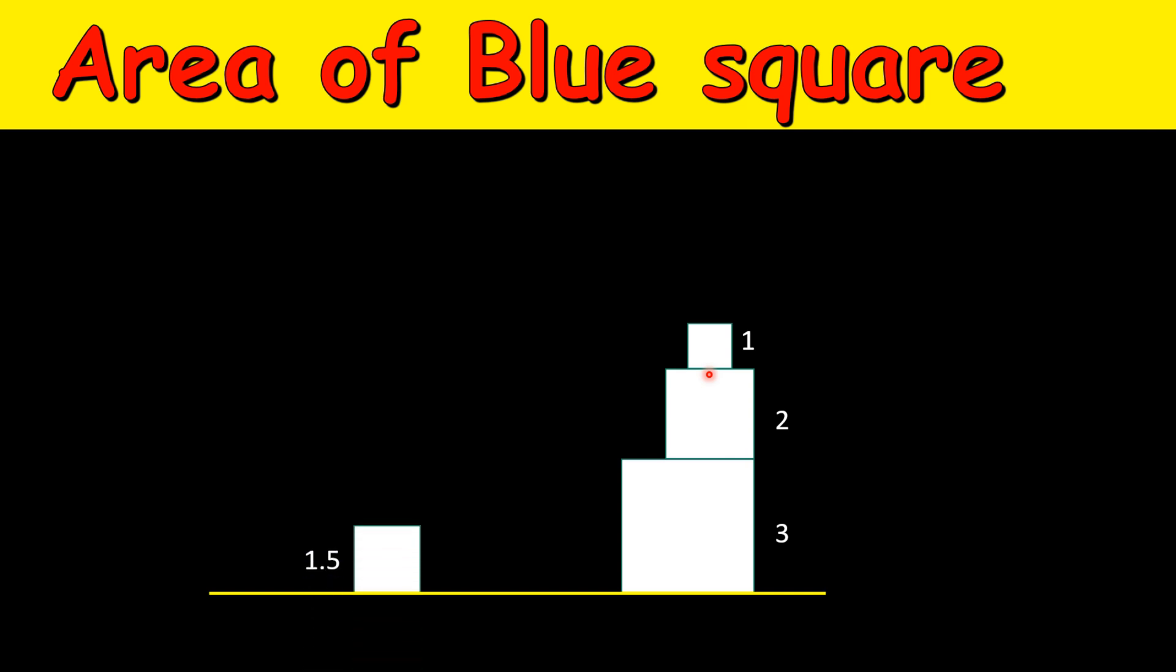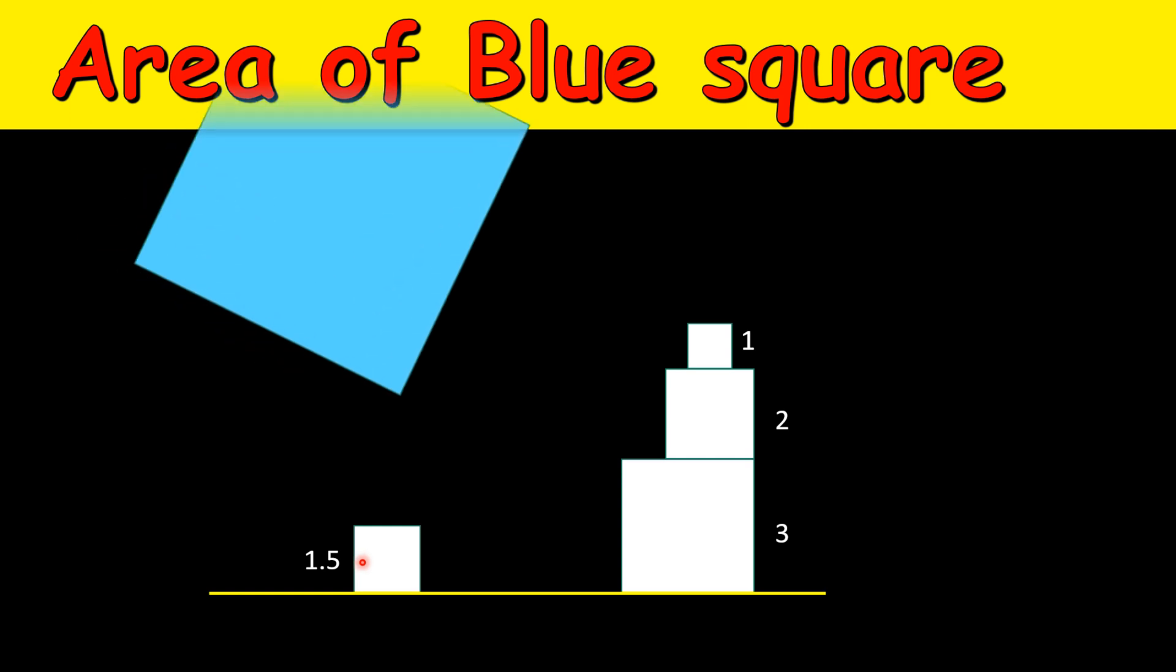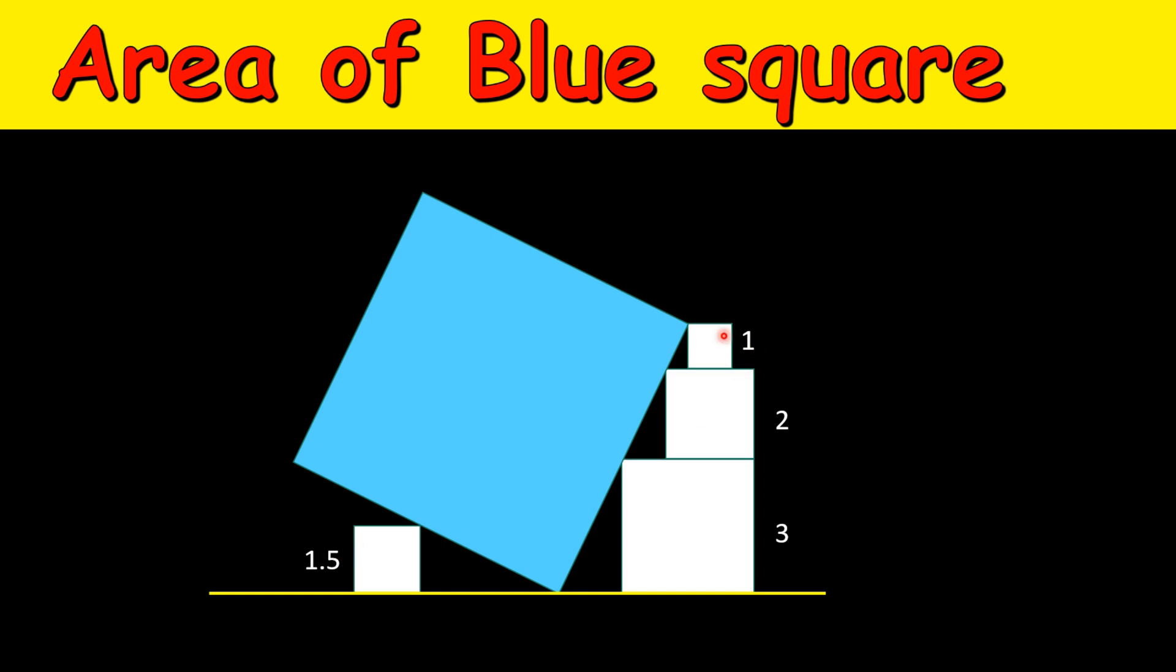We have another fourth square whose each side is of length 1.5 units, and finally we have a big blue square such that this side touches all these three corners of each of the squares.